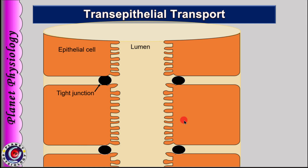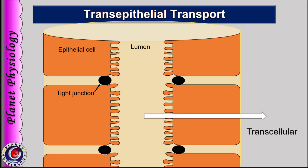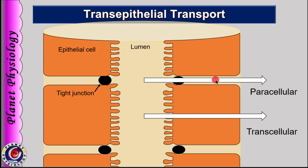As shown in this diagram, this represents the epithelial cells and these are the tight junctions. This is the luminal border and this is the basolateral border. Now if the substances are transported through the cell, it is called transport via the transcellular route. Sometimes substances do not enter the cell while crossing the epithelial sheet, but are directly transported through the intercellular space as you can see here. Such transport is called transport via the paracellular route.